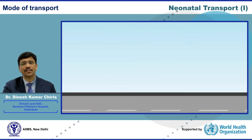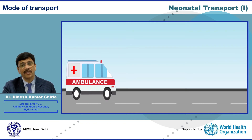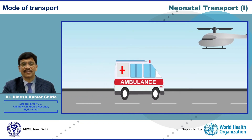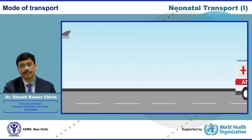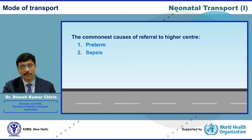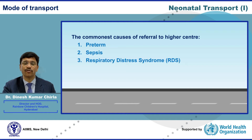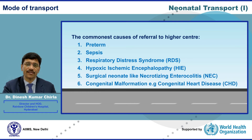The commonest mode of transport in India is still road transport; however, air transport facilities like helicopter and aeroplane are now available in the country. The commonest causes of referral to higher centers in India are prematurity, sepsis, respiratory distress syndrome, hypoxic ischemic encephalopathy, and surgical newborns like necrotizing enterocolitis or congenital malformations, especially congenital heart diseases.